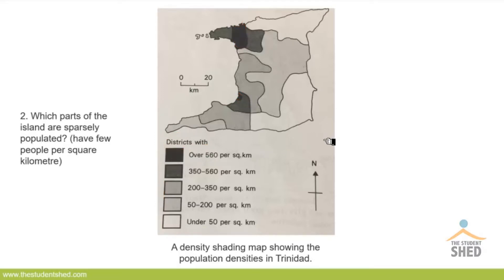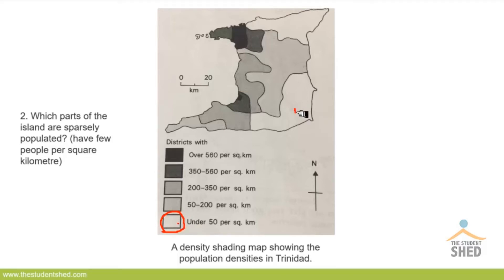Now let's look at the next question: which parts of the island are sparsely populated, that is have few people per square kilometer? Looking at the legend, the lightest shading represents under 50 persons per square kilometer. On the map, this color shading is found in this area in the south and this area in the northeast section of Trinidad. Those are the two areas that are sparsely populated.